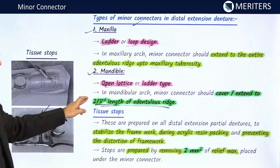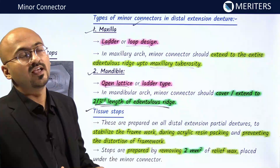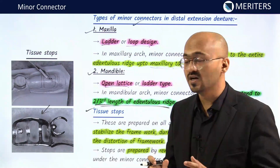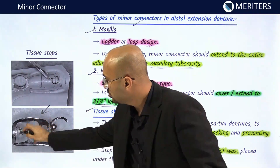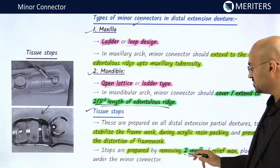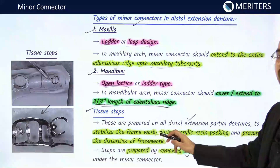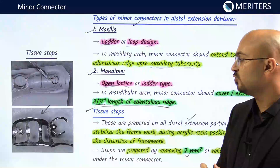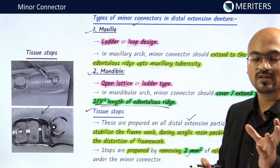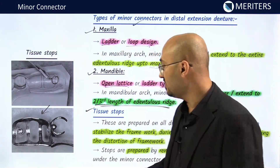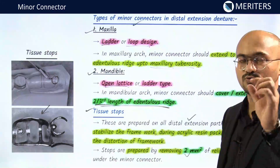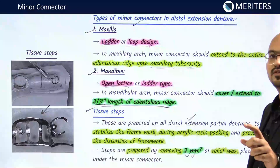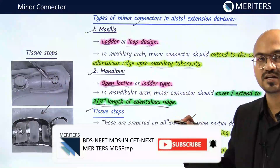Tissue stops, as the name suggests, stop on the tissues to keep the cast partial denture from swinging around. These squarish stops fabricated in the cast partial denture are two millimeters square. They are prepared on all distal extension partial dentures to stabilize the framework during acrylic resin packing and to prevent distortion of the framework. A layer of acrylic covers the minor connector where the teeth will be placed. Tissue stops ensure the acrylic flows exactly to the required height. They are prepared using relief wax or placed directly on the wax pattern.